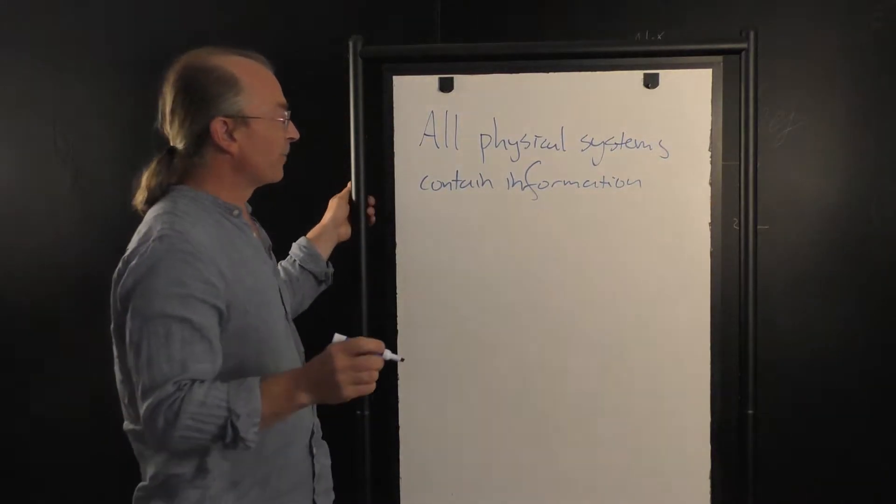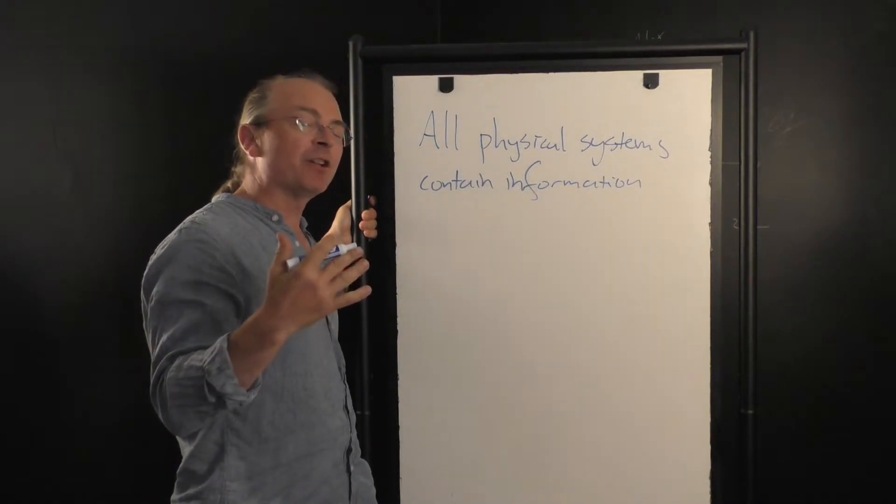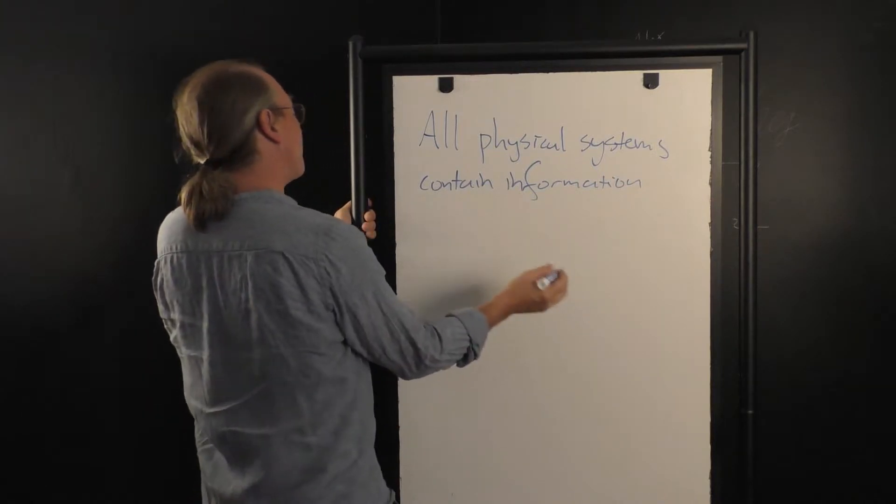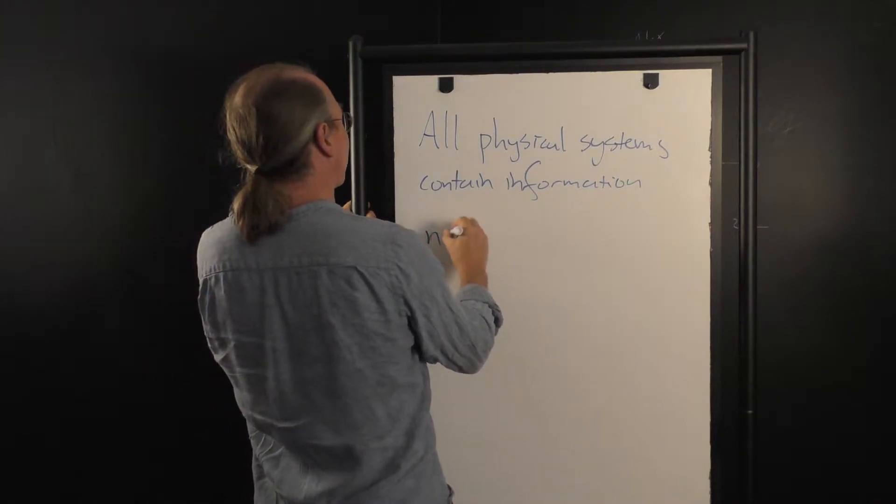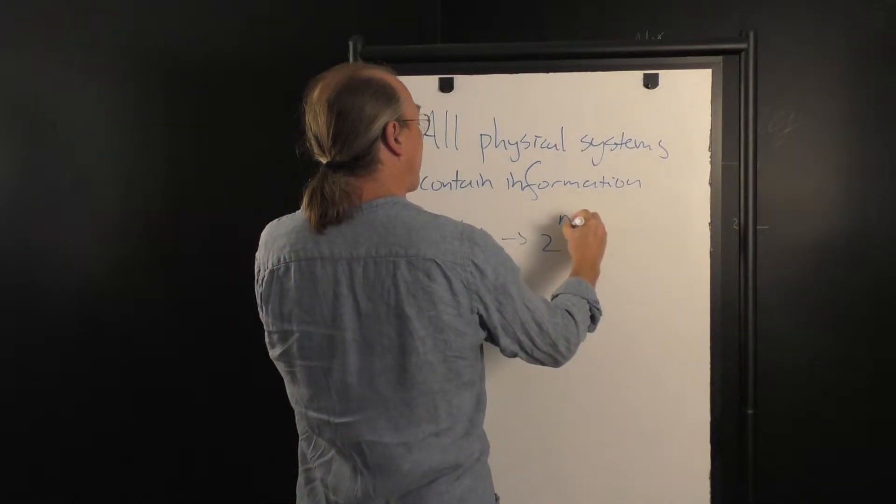But this discovery that all physical systems contain information is actually a very old discovery. If I have a physical system that has n bits, then that implies that it has 2 to the n,